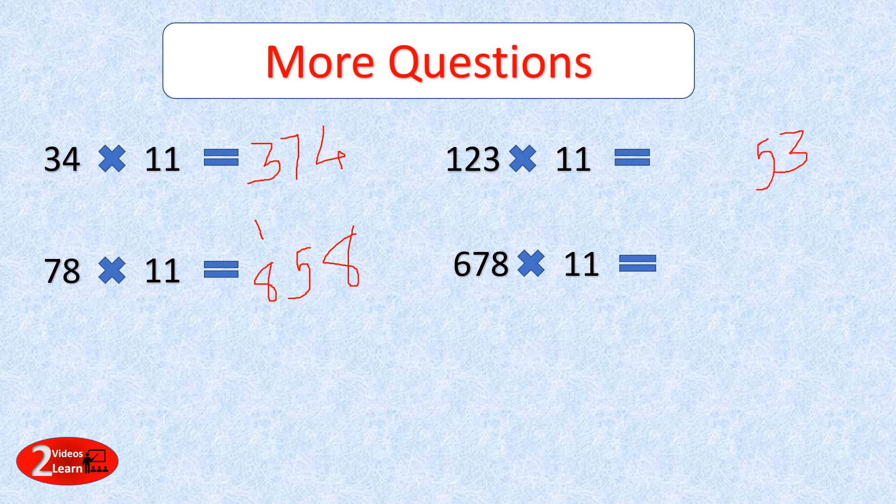Now let's see 123 by 11. I write 3 as is, then 3 plus 2 is 5, then 2 plus 1 is 3, and as there is no carry forward I write 1 as is. So the answer is 1353.